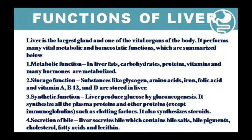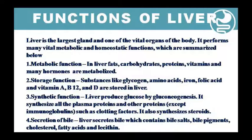Next is the synthetic function. The liver produces glucose. When we need to create glucose, we use glycogen — through the processes of glycogenesis and glycogenolysis. These two processes are going on in the liver. Also, all the plasma proteins and other proteins like clotting factors are made in the liver, along with steroid synthesis.